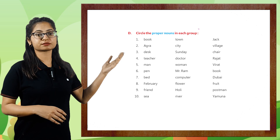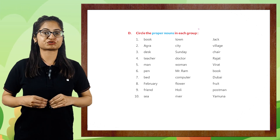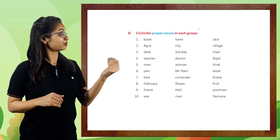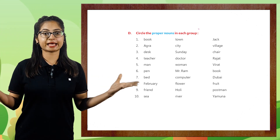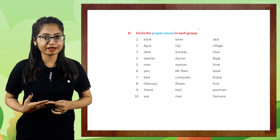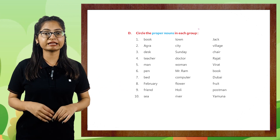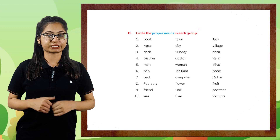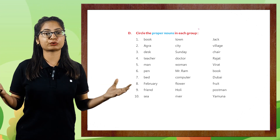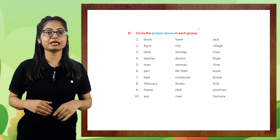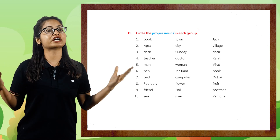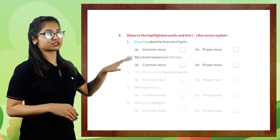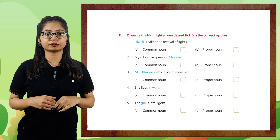'Man, woman, Virat' — Virat is a proper noun. 'Pen, Mr. Ram, book' — Mr. Ram is a proper noun. Next: 'bed, computer, Dubai' — Dubai is a proper noun. 'February, flower, fruit' — February is a proper noun. 'Friend, Holi, postman' — Holi is a proper noun. Next: 'sea, river, Yamuna' — Yamuna is a proper noun.